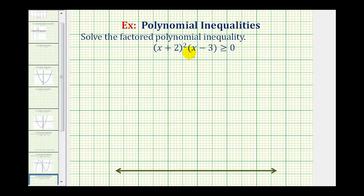To do this, we'll first find the x values that make this product equal to zero, and then we'll use those values to form intervals on the number line. Then we'll test each interval to see which intervals satisfy this inequality.